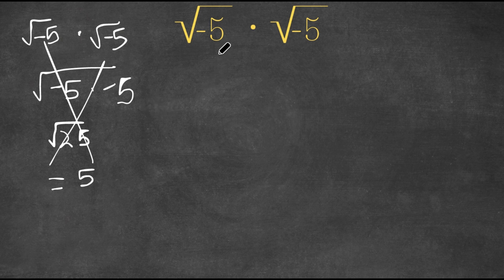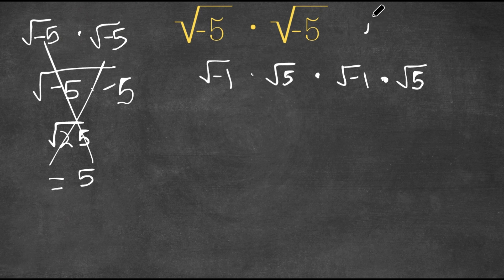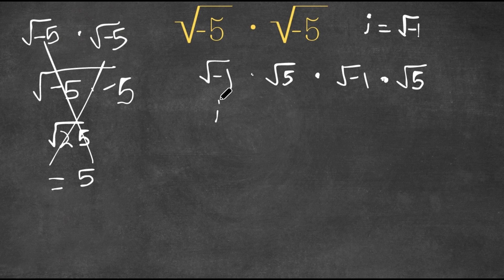The right method is to first rewrite the square root of negative 5 as the square root of negative 1 times the square root of 5. And do the same thing with the second term: the square root of negative 1 times the square root of 5. Since i is the imaginary number equal to the square root of negative 1, I'm going to replace all the square root of negative 1's with i. So now I have i times the square root of 5, times i times the square root of 5.